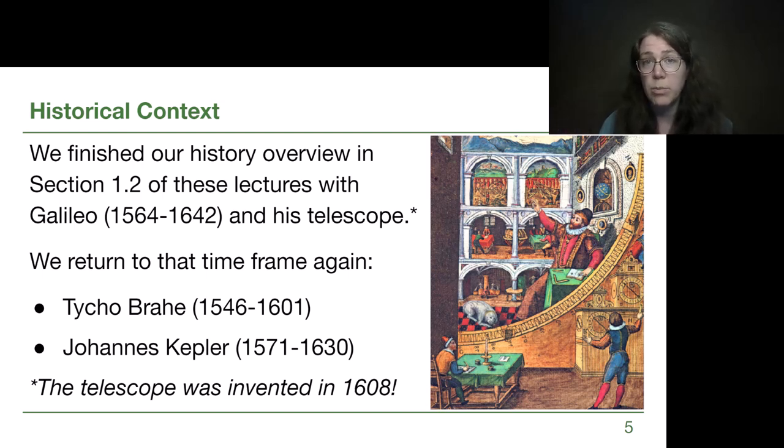He was given funds by the Danish king when he discovered a supernova that he incorrectly thought was a new star. But he's doing all of this through careful measurements of angles, altitude, and azimuth rather than detailed telescope observations.